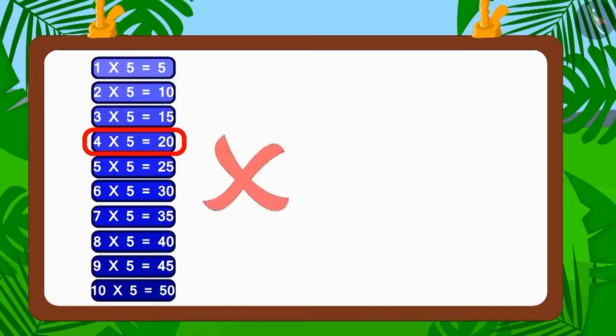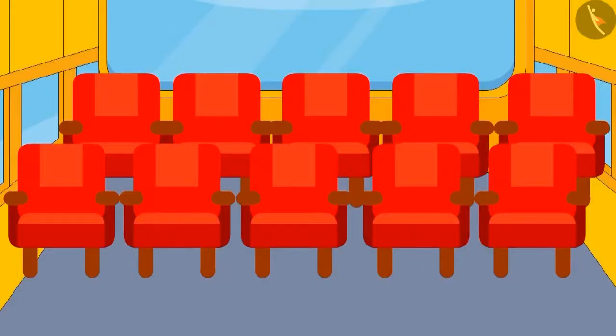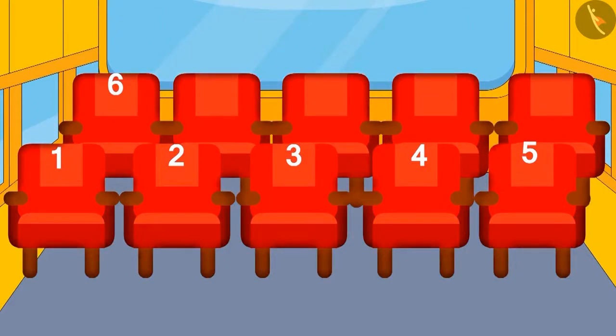Similarly, if we look at the table of five, then we will find that five is also not a factor of number six. So a bus in which five people sit in each row will not be of any use to the villagers.